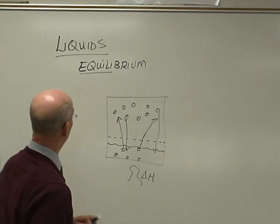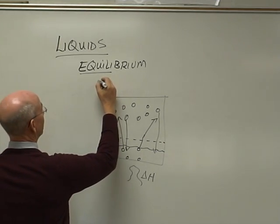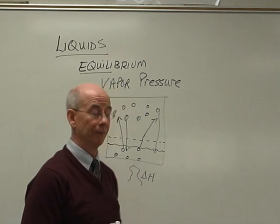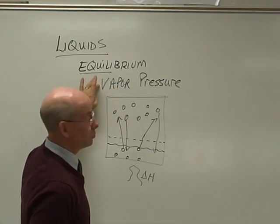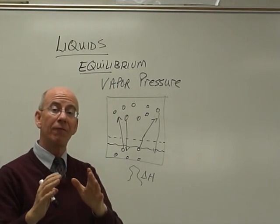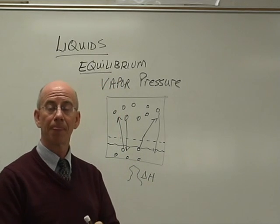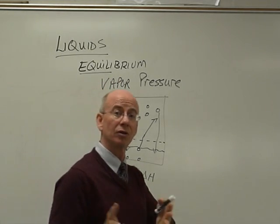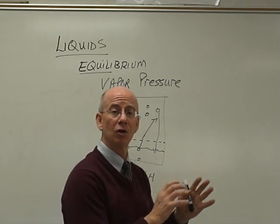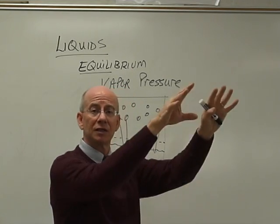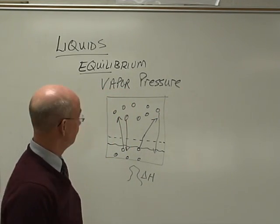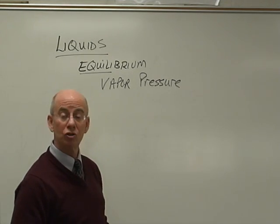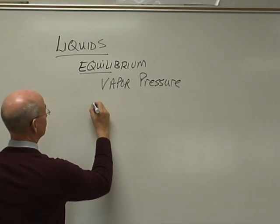And then we come to something called vapor pressure. Vapor pressure is another intensive property, which means we can use it to identify substances. Every liquid has its own vapor pressure. It means literally the pressure to boil, or the pressure to go from liquid to gas.